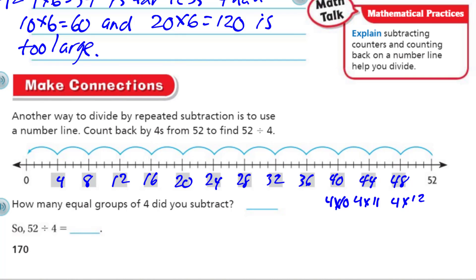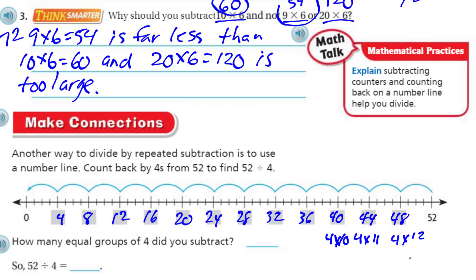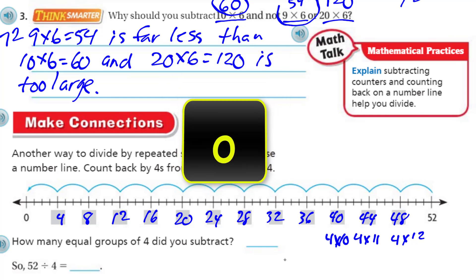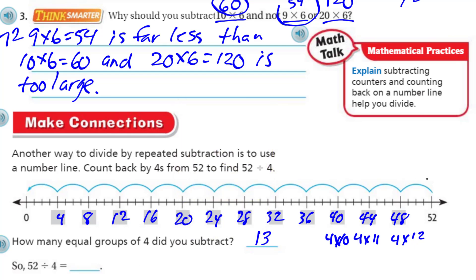How many equal groups of 4 did you subtract? I need to count them now. I had 12 is 48, so it would be 13. 4 times 12 is 48, so 4 more is 52. So that means we did it 13 times. We're actually counting this as 1 here. I could have done this from the beginning. Just counted them all up this way. At least we have our 13. 52 divided by 4 is equal to 13.